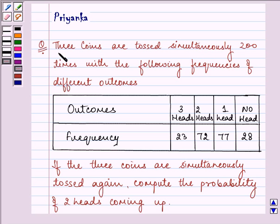Hello and how are you all today? The question says 3 coins are tossed simultaneously 200 times